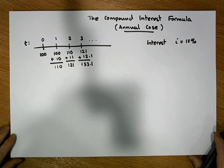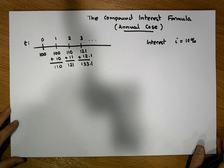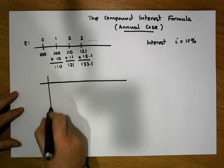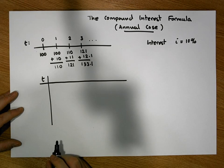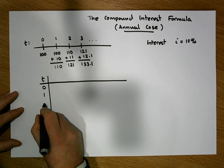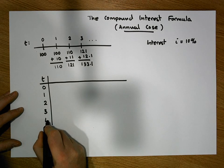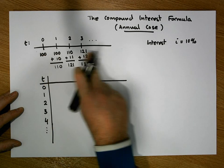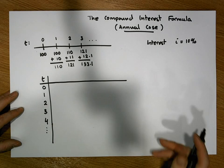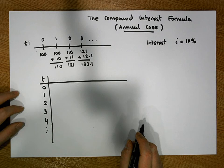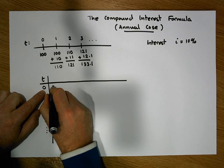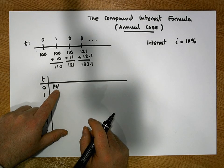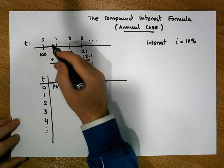So let's try to derive a general formula for this type of interest application. Let's do a table with t for the number of years elapsed — zero, one, two, three, four and continuing. Instead of placing 100 euros in the account, let's use a general principal value PV. At time zero what we have in the account is simply our principal investment PV, with nothing else added.